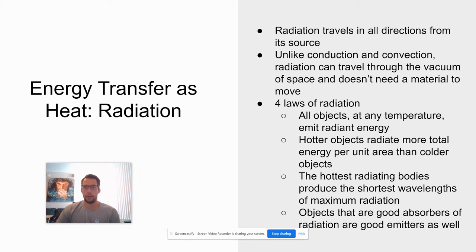The hottest radiating bodies produce the shortest wavelengths of maximum radiation. That means that the sun is going to produce shorter wavelengths than the Earth because the sun is much hotter than the Earth. That means that most of the radiation we get from the sun is going to be in the form of light. It's really high frequency, short wavelength, but the Earth is going to emit mainly thermal energy.